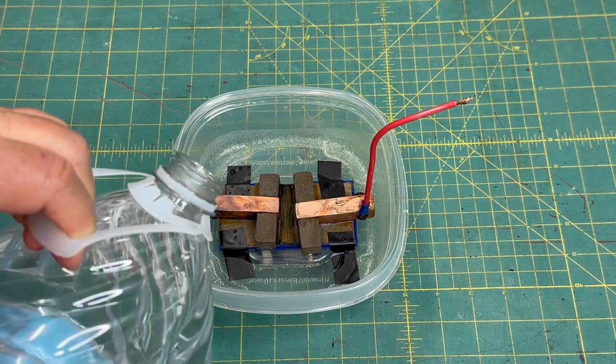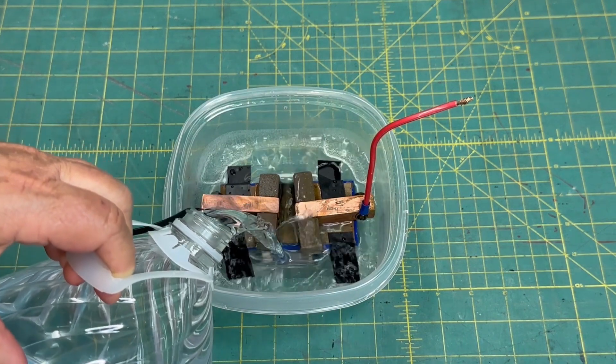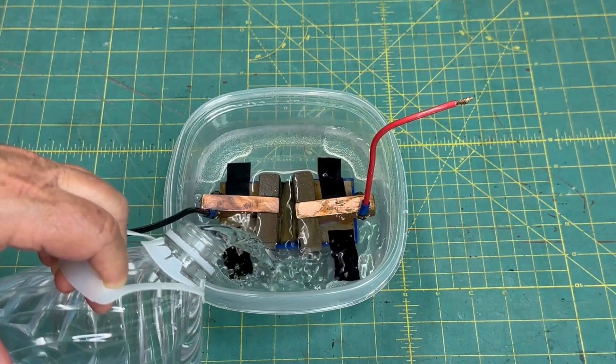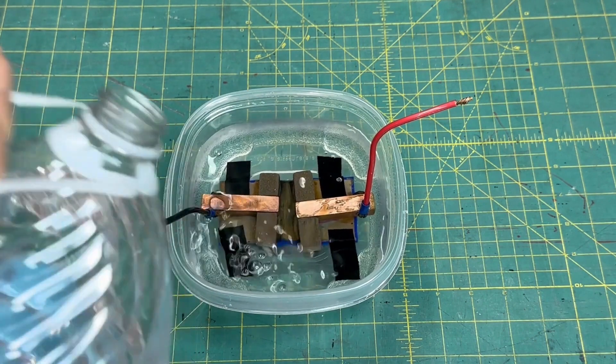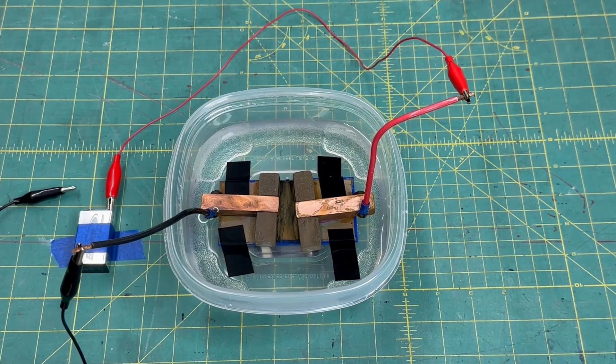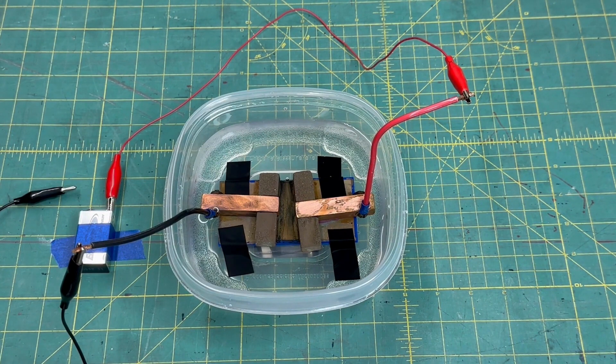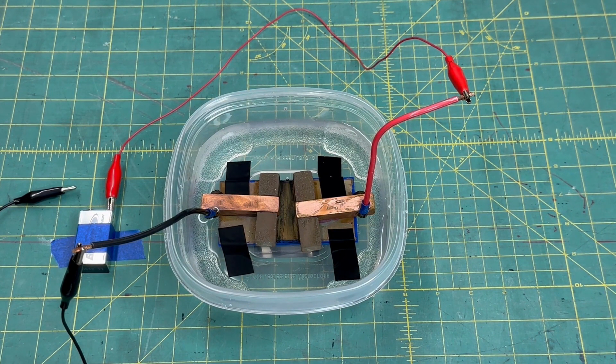Now I'm going to add the water. I'm just going to put in enough to cover the electrodes. Water is a poor substitute for plasma, which is just a charged gas or flame. With water there's nothing for the magnets to grab onto.